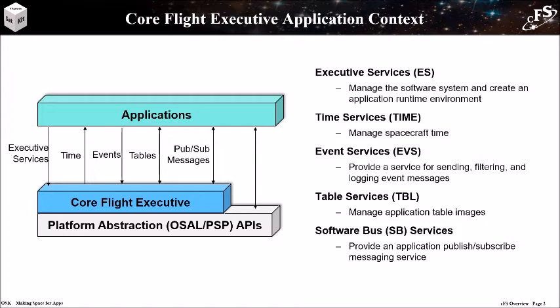Tables are a collection of application parameters, and the table service coordinates the loading and dumping of tables between a file and an application. The fifth service, the software bus, provides an application publish-and-subscribe messaging system.